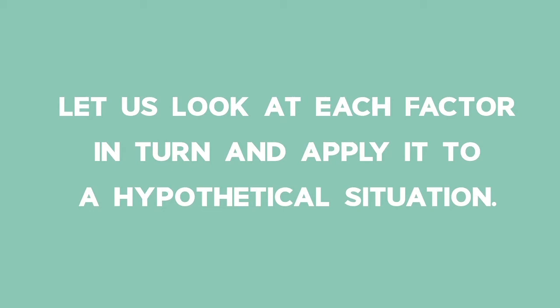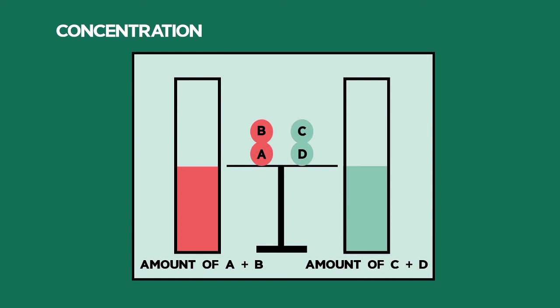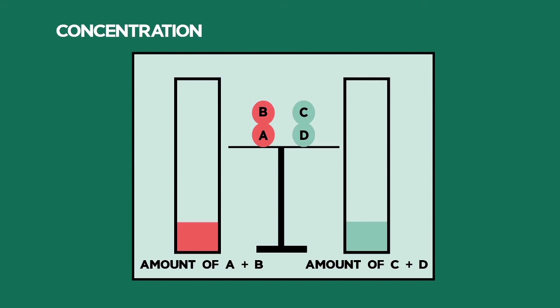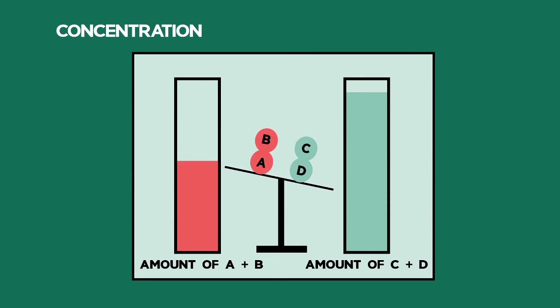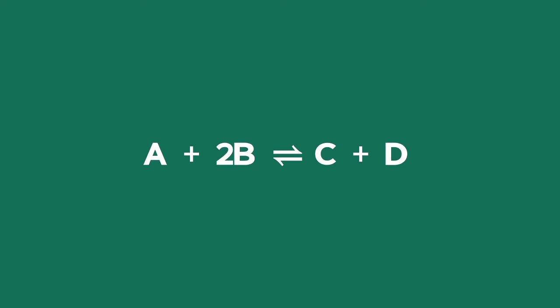Let's look at each factor in turn and apply it to a hypothetical situation. Looking at the simulation for A plus B producing C plus D, as we change the concentration of A plus B, we have to adjust the concentrations of C plus D in order to return to a state of dynamic equilibrium. Similarly, if we change the concentration of C plus D, we need to adjust A plus B in order to return to a state of dynamic equilibrium.